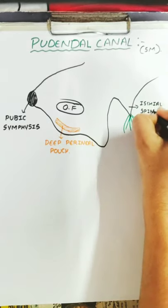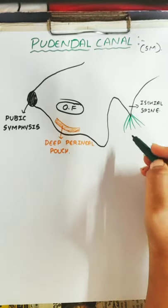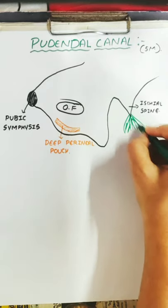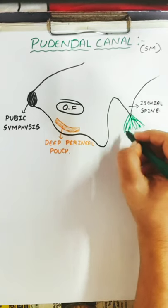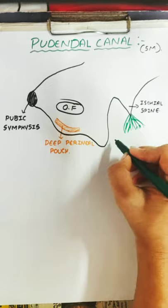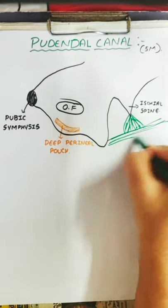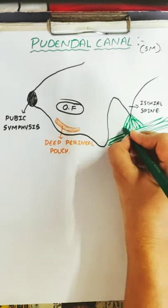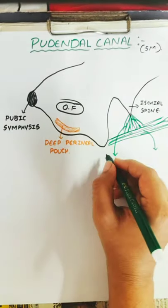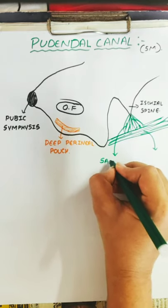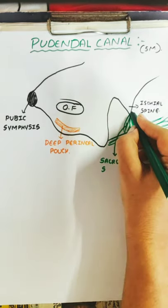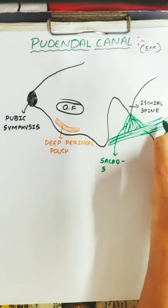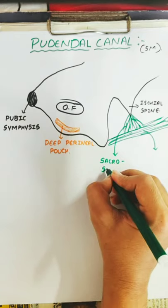There are two ligaments: the sacrotuberous ligament and the sacrospinous ligament, which get attached to the lower part of the sacrum and the coccygeal bone. You can see the two ligaments present in this simplified diagram. This one is getting attached to the ischial spine, so it is the sacrospinous ligament. This tube-like structure is called the sacrotuberous ligament.